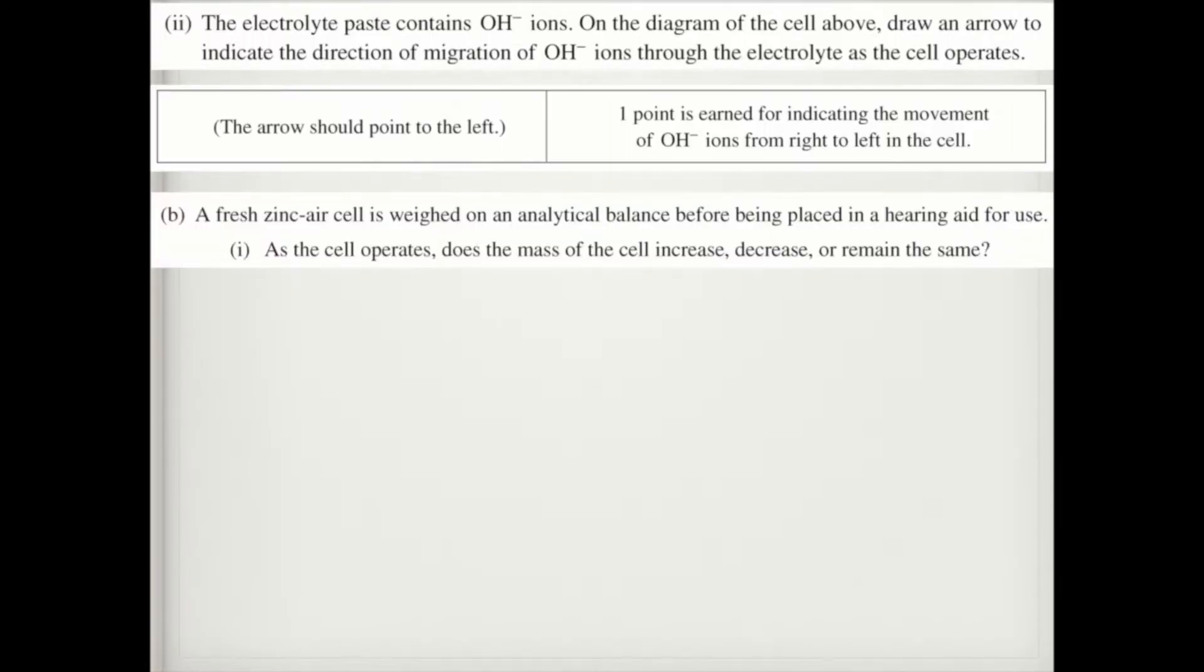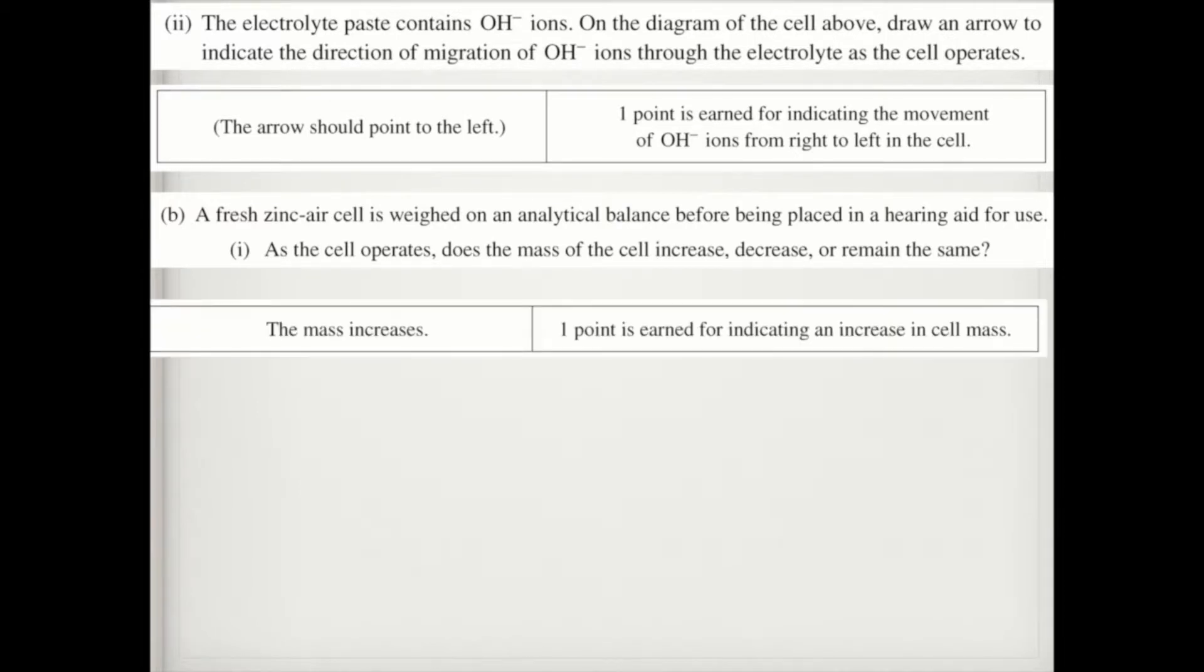In part B, it says a fresh zinc air cell is weighed on an analytical balance before being placed in a hearing aid for use. As the cell operates, does the mass of the cell increase, decrease, or remain the same? Well, the answer is increase. And other than writing increase, would you get 1.4? Don't write anything else because in part II, it asks you to justify your answer.